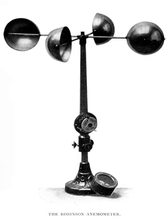An anemometer is a device used for measuring wind speed, and is also a common weather station instrument. The term is derived from the Greek word anemos, which means wind, and is used to describe any wind speed instrument used in meteorology. The first known description of an anemometer was given by Leon Battista Alberti in 1450.